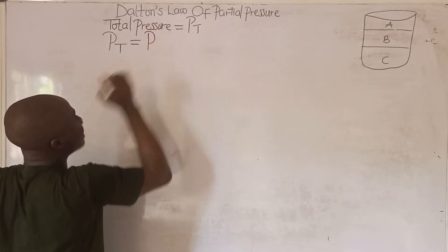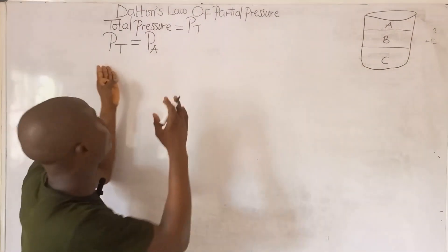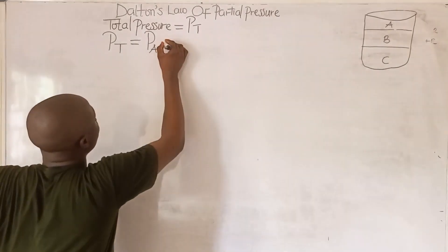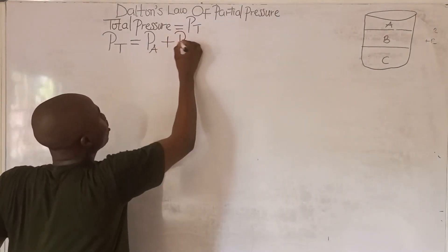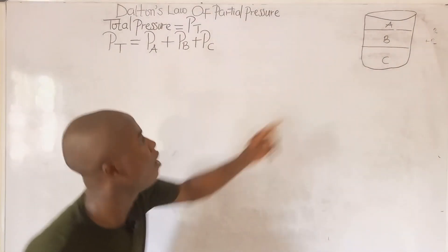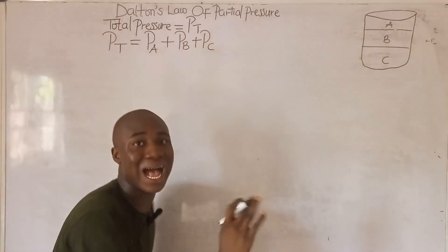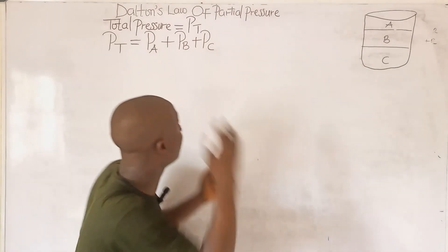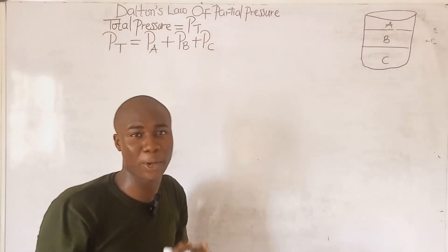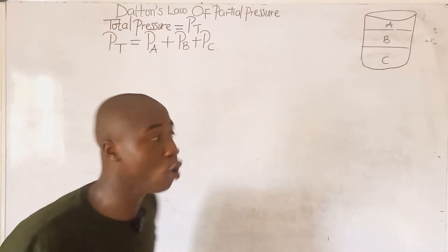The partial pressures of the gases are: partial pressure of Gas A, plus partial pressure of Gas B, plus partial pressure of Gas C. If there were four gases — say Gas D — we would simply add the partial pressure of Gas D. That is what Dalton's Law states: the total pressure of a mixture of gases equals the sum of the individual partial pressures, provided the gases do not react with each other.